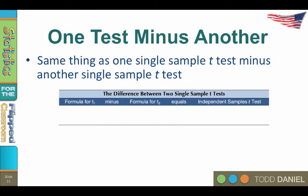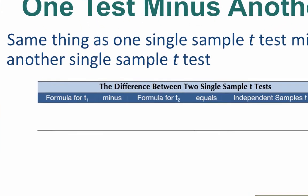The nature of the independent samples t-test tells us a little bit about what is being done with this test. Mathematically, the independent samples t-test is the same thing as one single sample t-test minus another single sample t-test. Let's look at that.